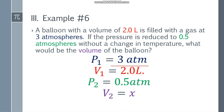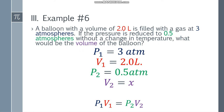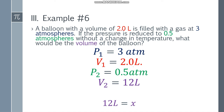Initial volume is 2.0 liters, resulting pressure is 0.5 atm, and resulting volume is x. Since we have all four variables, we place the formula P1 V1 = P2 V2. Substituting: 3 times 2 equals 0.5 times x. Simplifying: 6 equals 0.5x. Dividing both sides by 0.5, x equals 12. The final answer is 12 liters.